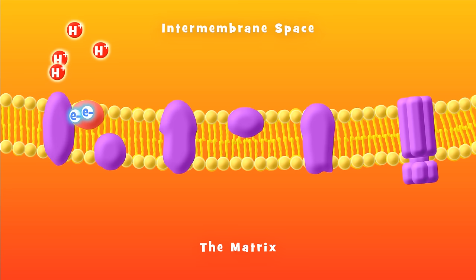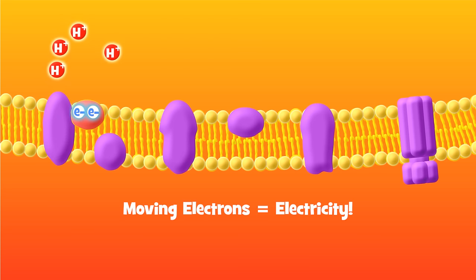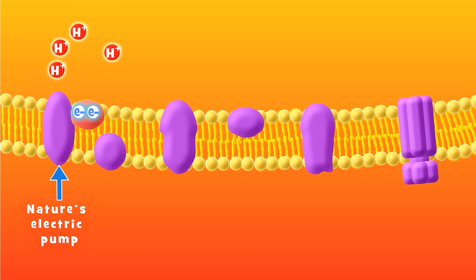At this point, it might help to realize that moving electrons is electricity, so it should not be surprising that these electrons can provide the energy to drive these microscopic pumps made out of protein. They are basically natural electric pumps, created way before humans invented them, which is super cool.